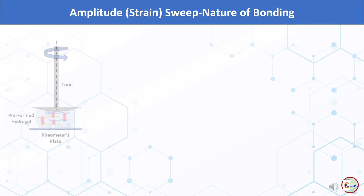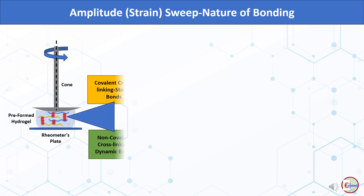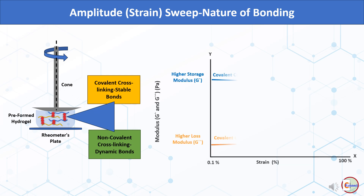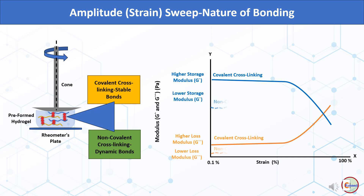Amplitude sweep may also reveal the nature of bonding among hydrogel components. Two types of bonding exist between cross-linkers and polymer chains: covalent cross-linking, considered stable, and non-covalent cross-linking, considered dynamic. Covalent cross-linking results in higher moduli that remain steady over the entire strain sweep range, while non-covalent cross-linking yields lower moduli that do not remain steady. Hydrogels with covalent bonds are generally strong gels with higher gel breaking points than those with non-covalent bonds.